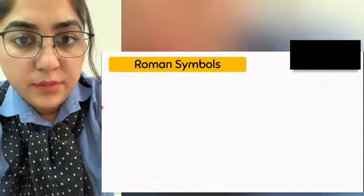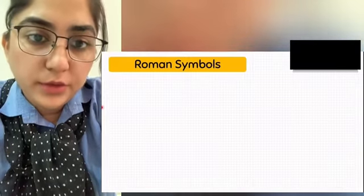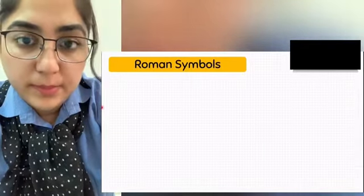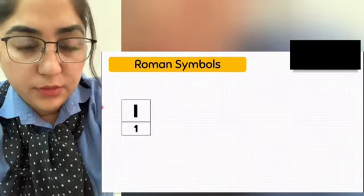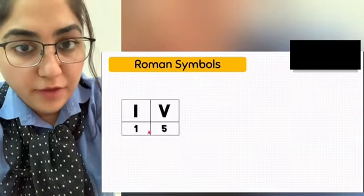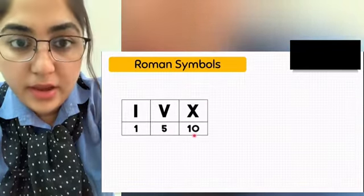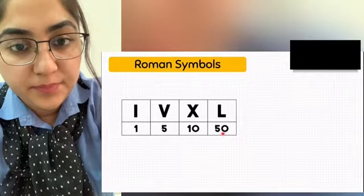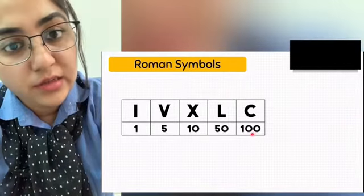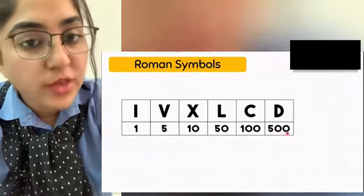Let's start with the first topic: Roman symbols. The Roman number system uses 7 symbols to write any numeral. The first Roman symbol is I, which represents 1. The second is V, which represents 5. Next is X, which represents 10. Then L, which represents 50. Then C, which represents 100. The sixth symbol is D, which represents 500. And the last Roman symbol is M, which represents 1000.